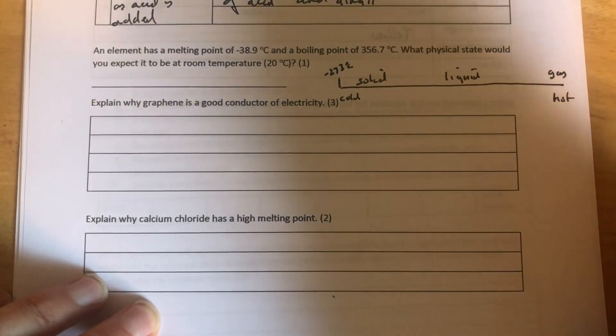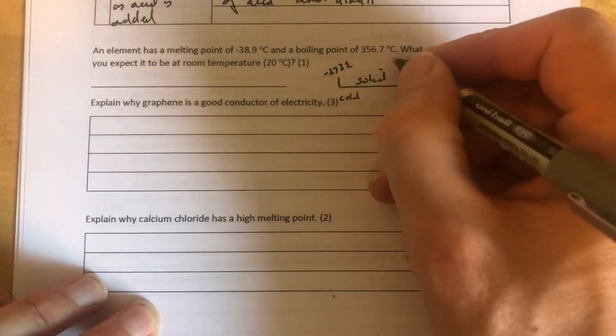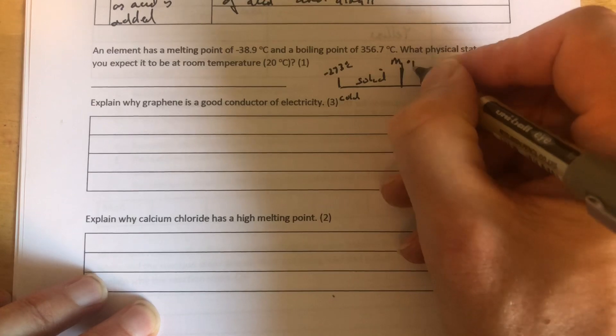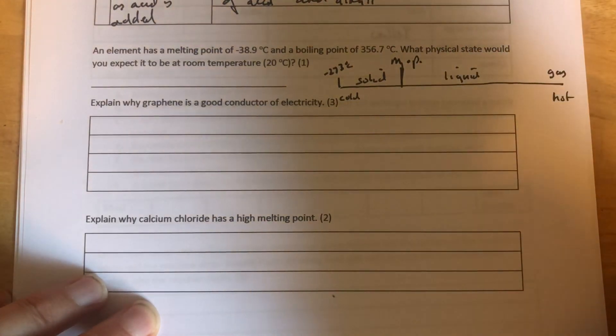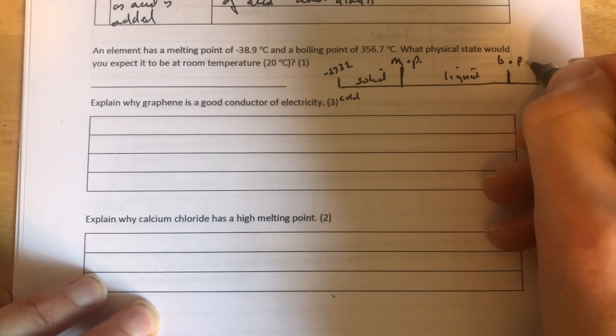All happy with that? Now, the solid to liquid transition, let's just mark it up there, we call the melting point. I'll put MP for melting point. The liquid to gas transition, we call the boiling point.